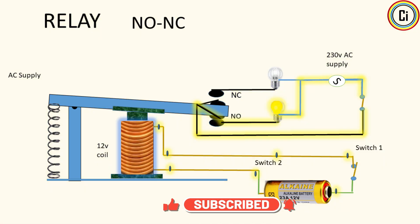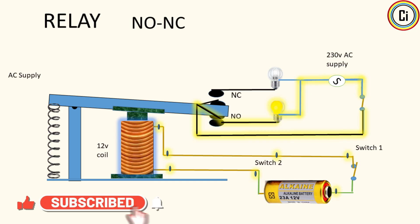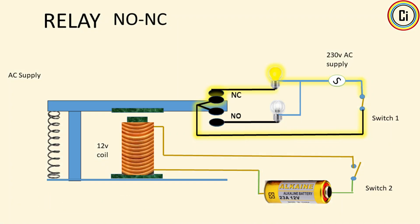When voltage is applied to the coil, it creates a magnetic field that attracts the armature. This movement switches the contacts — the NC opens and NO closes. When coil power is removed, the spring restores everything back. This simple action makes the relay act as a safe interface between the control signal and high power loads.